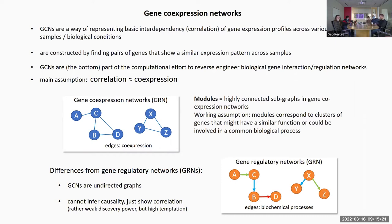Gene co-expression networks are a much less ambitious version than gene regulatory networks, where you have directions for the interaction and various biochemical processes — up-regulation, down-regulation. When you have gene co-expression, you cannot claim anything mathematically or algorithmically; this is just an undirected graph. So you just have connections — maybe if you use a weighted graph, the connections are more or less intensive, based just on correlation. So it's not that rich in information.